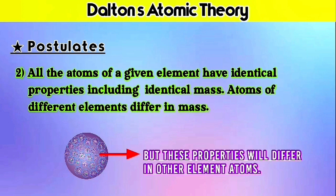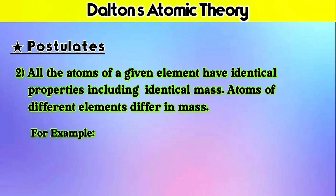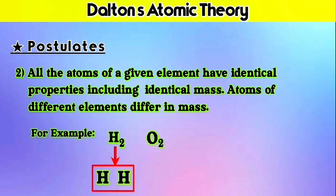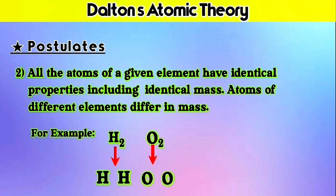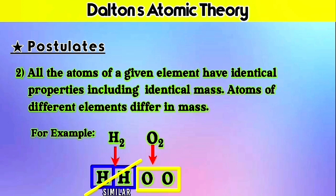Let's understand this more clearly through an example. Let's take two elements, H2 and O2. H2 contains two hydrogen atoms, and O2 contains two oxygen atoms. According to this postulate, the properties of one atom of hydrogen will be similar to the other atom of hydrogen and all other hydrogen atoms. But at the same time, its properties will not be similar to the oxygen atom. Each oxygen atom will have similar properties to all other oxygen atoms, but it will differ from atoms of other elements. So the second postulate is now clear.